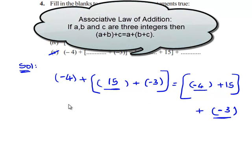This is because of the associative property of addition of integers. That is, when negative 4, 15, and negative 3 are added in any order, we get the same value.